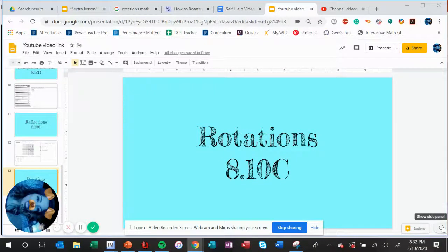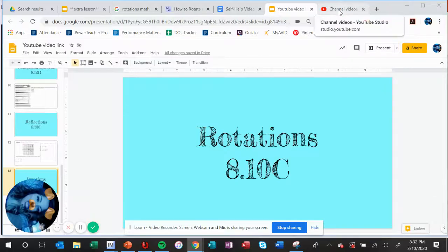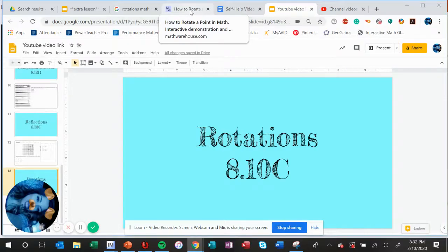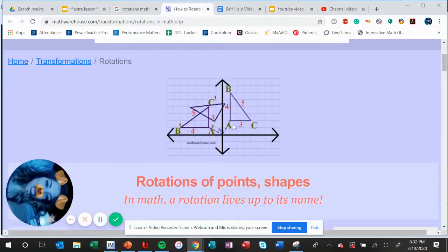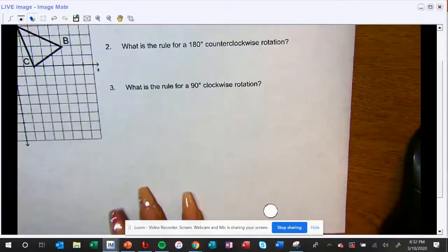Okay, in this video I'm going to show you how to do rotations under TEKS 8.10c. Just like when we were doing reflections, a rotation is where you take a shape and rotate it along a certain point of rotation. In this case they're using the origin and rotating it around. It's going counterclockwise but you can also do it clockwise. Let me show you how to work out problems like this.